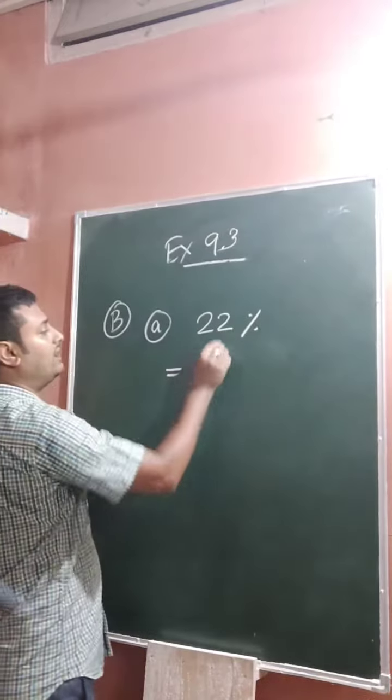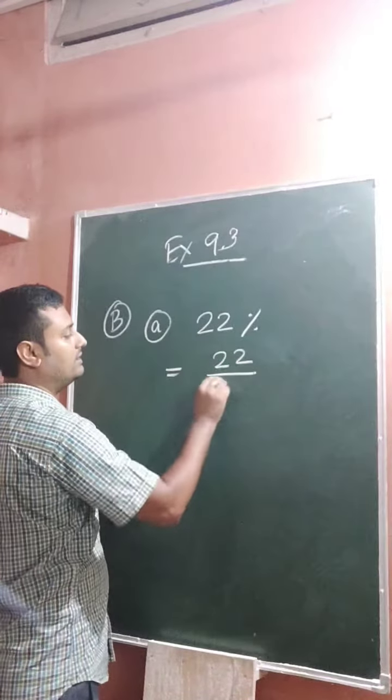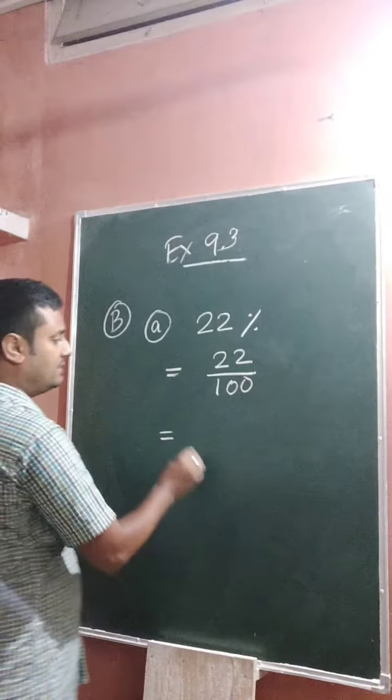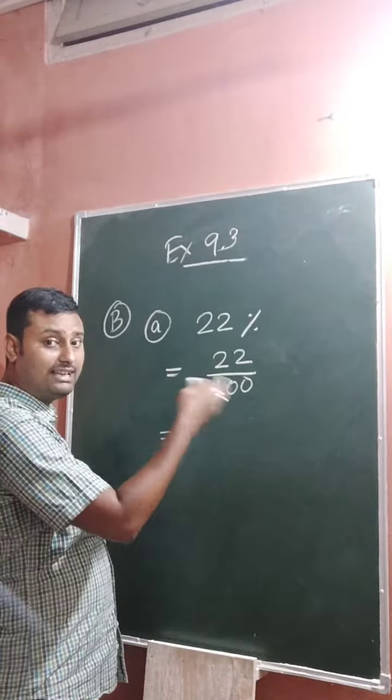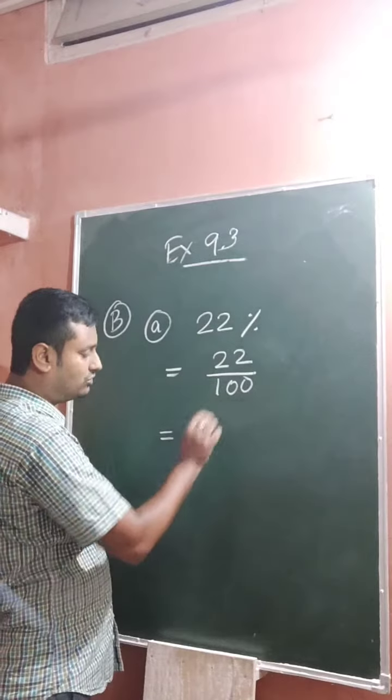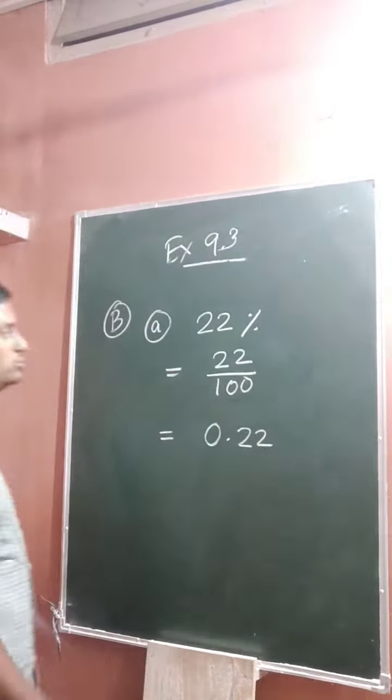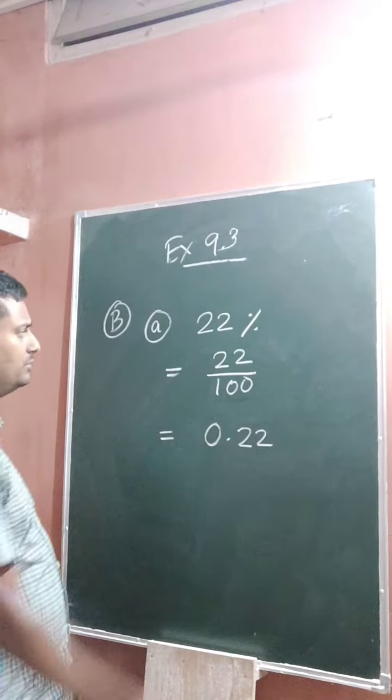So 22% equals 22 by 100. You already know how to do this type of question. 22 by 100. There are two zeros here, so after the decimal there must be two digits. Therefore 0.22.